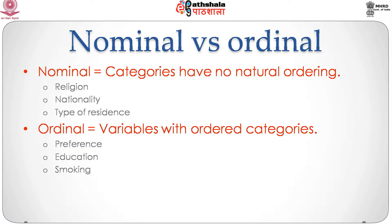In some cases the categories are nominal, in some cases ordinal, and in some cases one could be nominal and the other could be ordinal. To recapitulate, nominal variables are those for which the categories have no natural ordering. Examples are religion, nationality, and type of residence. Ordinal categories are those where the variables have a natural kind of ordering. Examples could be preference, education, smoking, and so on.